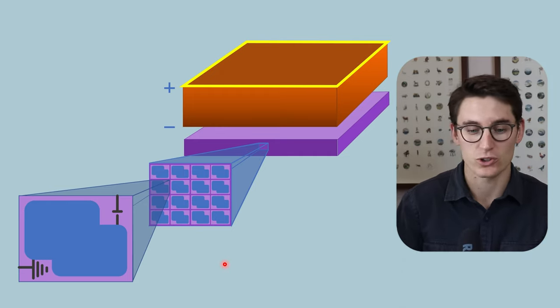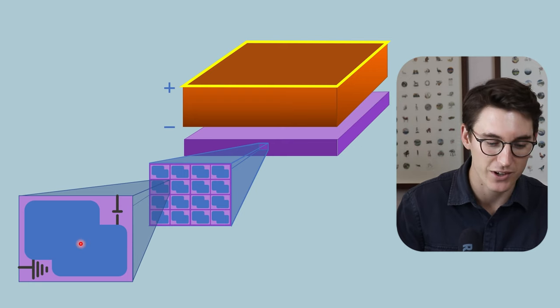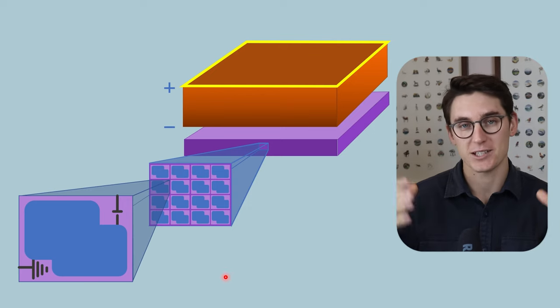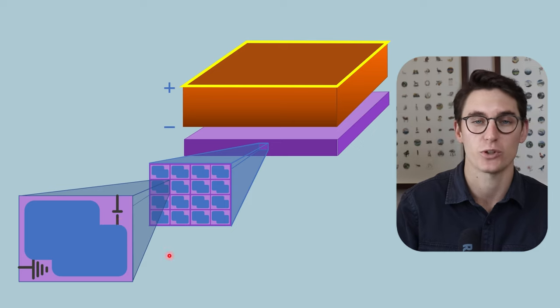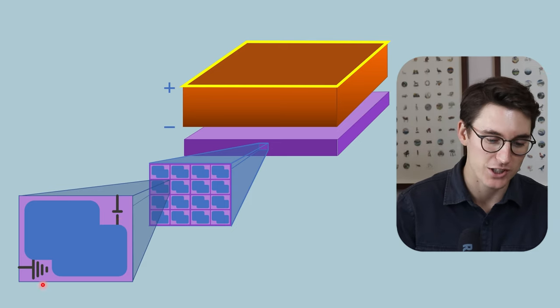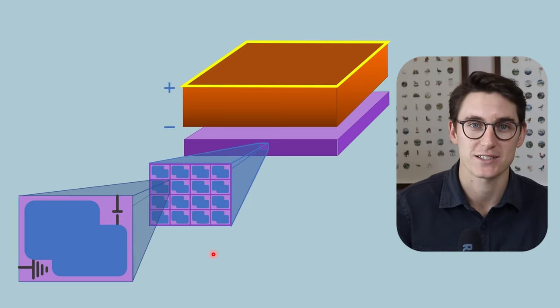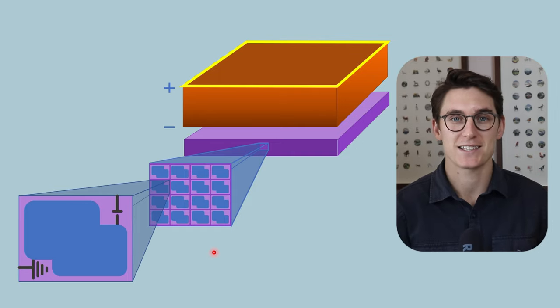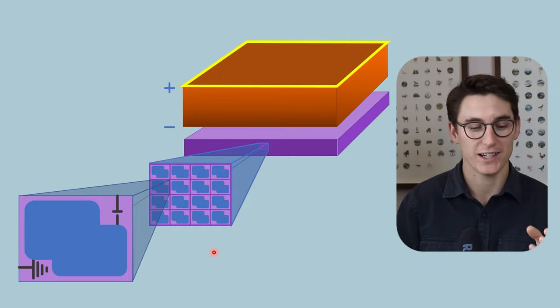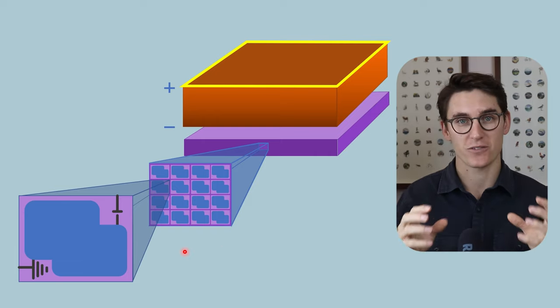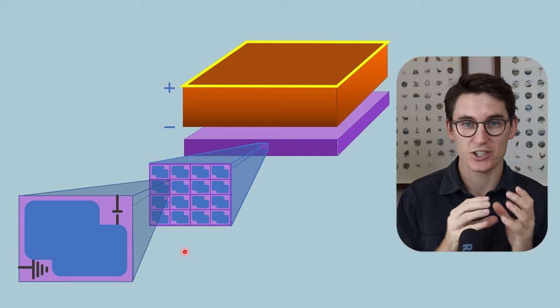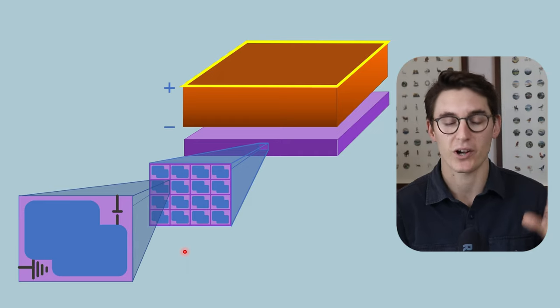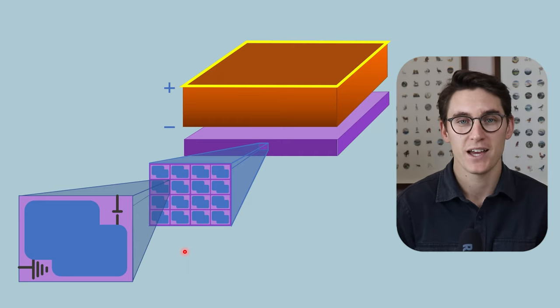When those electron holes come down onto this sensitive area, that charge is stored within the capacitor. After our x-ray has been exposed, we can then sequentially close these TFT switches and read out the charge that has been stored in our capacitors. That charge is then amplified and sent to our computer where each dell represents a specific pixel on our image, and the amount of current stored within each capacitor correlates to a pixel value, a grayscale value on our image.